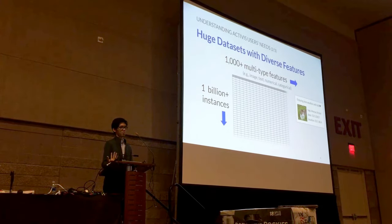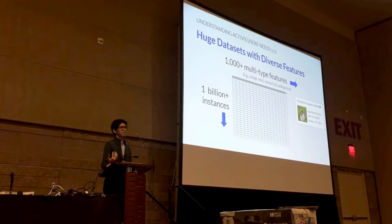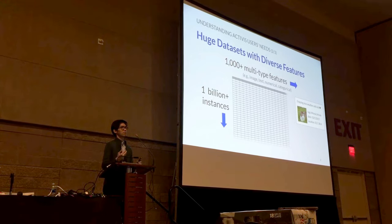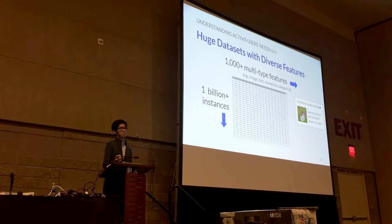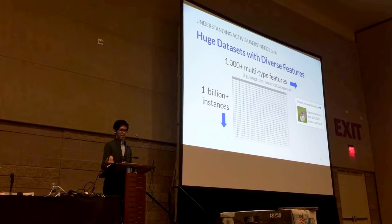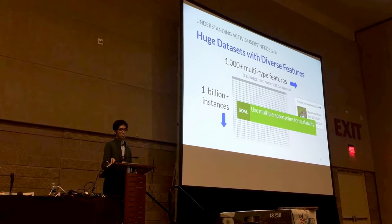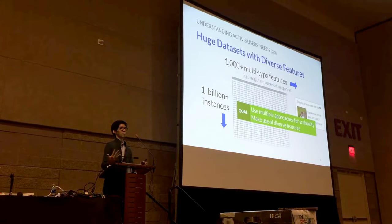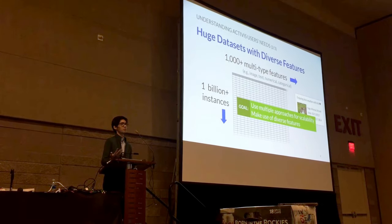Secondly, datasets are huge and diverse. There are often billions of training instances, and each instance is constructed from many different sources. Instances are frequently represented as high-dimensional vectors transformed from image, text, and categorical attributes using embedding techniques. This means we need multiple approaches to address scalability challenges, but it also provides opportunities to leverage diverse attributes through filtering or grouping techniques.